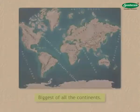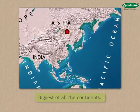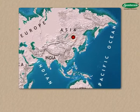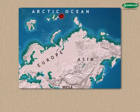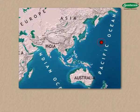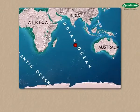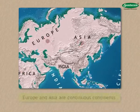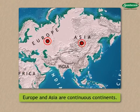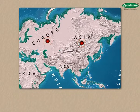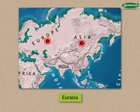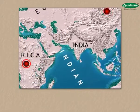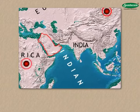Asia is the biggest of all the continents. This continent extends in all the four hemispheres. The Arctic Ocean is to the north, the Pacific Ocean is to its east, and the Indian Ocean is to its south. The continent of Asia is connected to two continents — Europe and Africa. Europe and Asia are continuous continents with no ocean in between them, and are also referred to as Eurasia. The continents of Asia and Africa are joined by a narrow strip of land called the Sinai Peninsula.